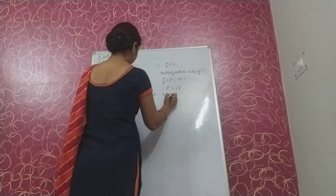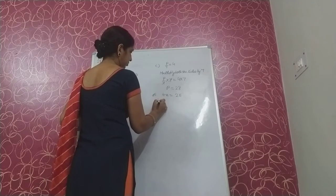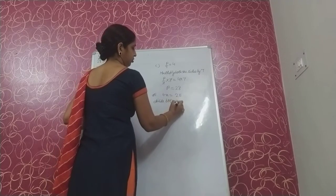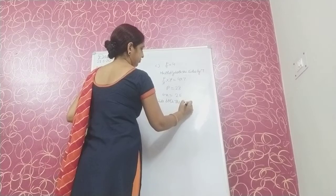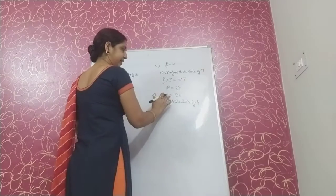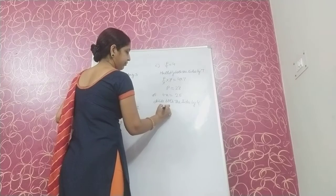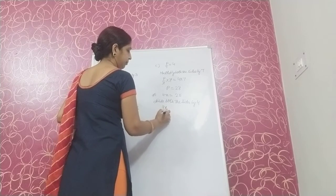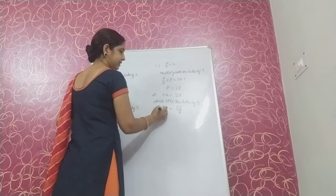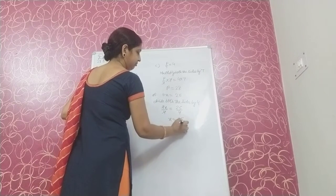Next, 4x equal to 25. Divide both sides by 4 since 4 is multiplying the variable. 4x upon 4 is equal to 25 upon 4. This 4 gets cancelled by the other 4. So x is equal to 25 upon 4.